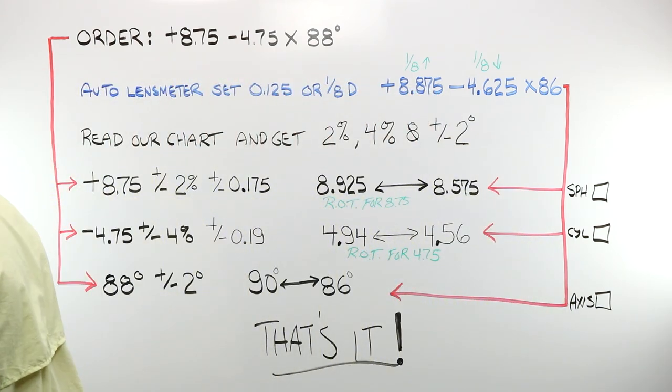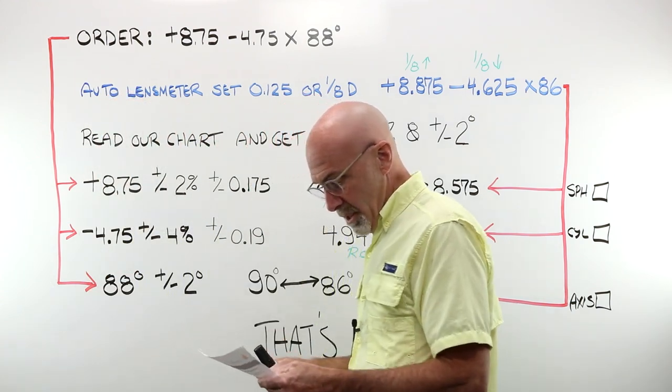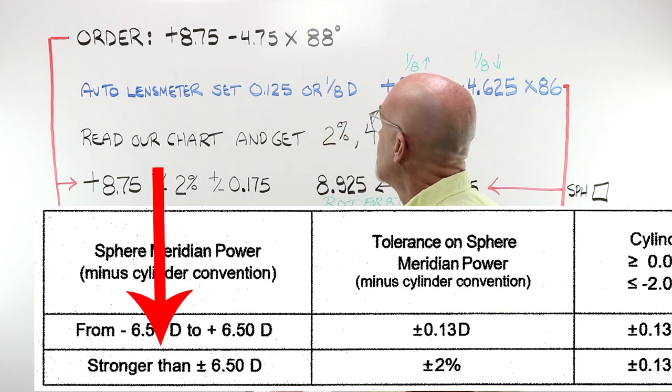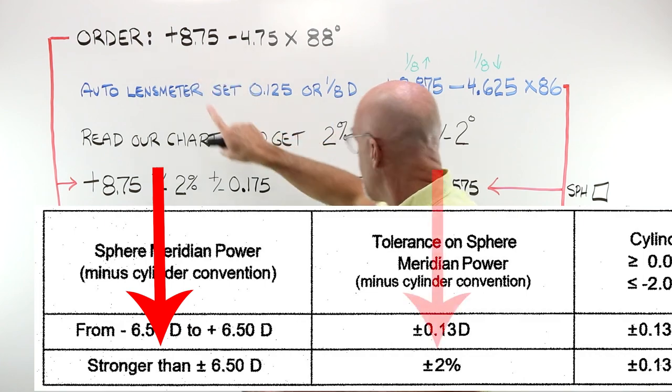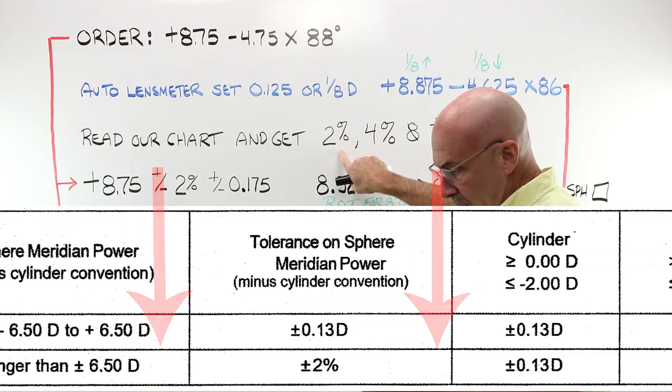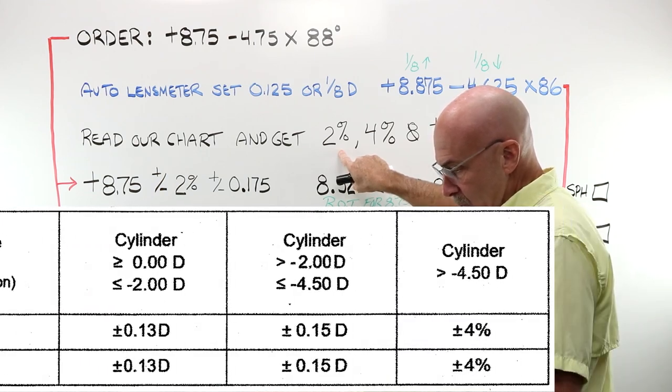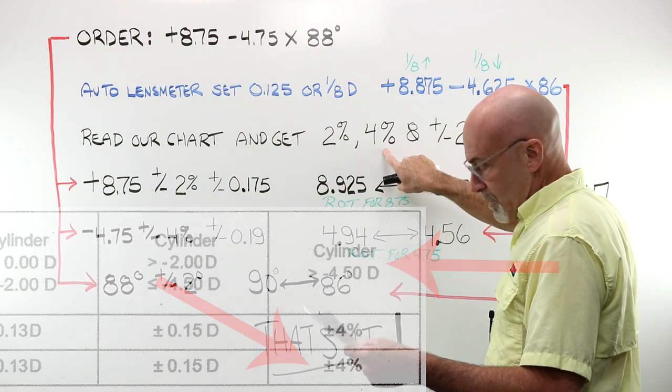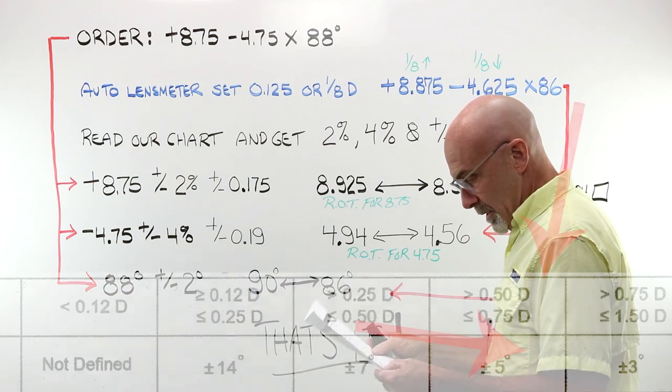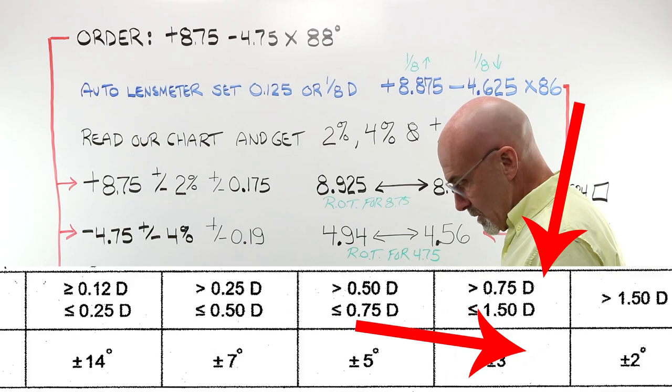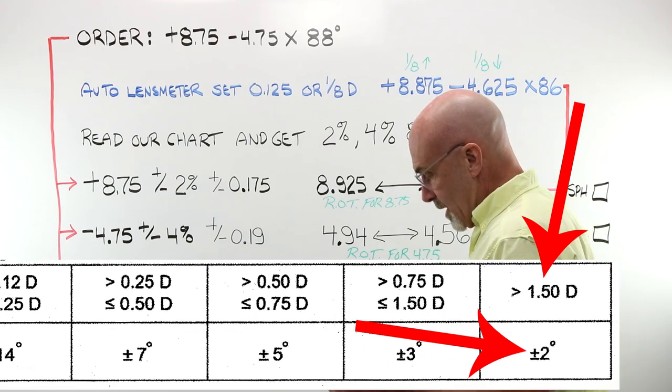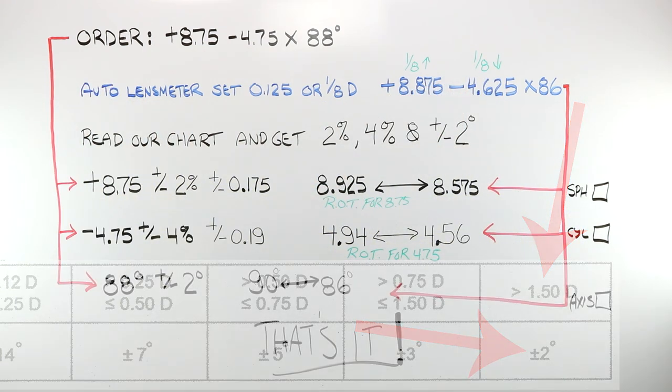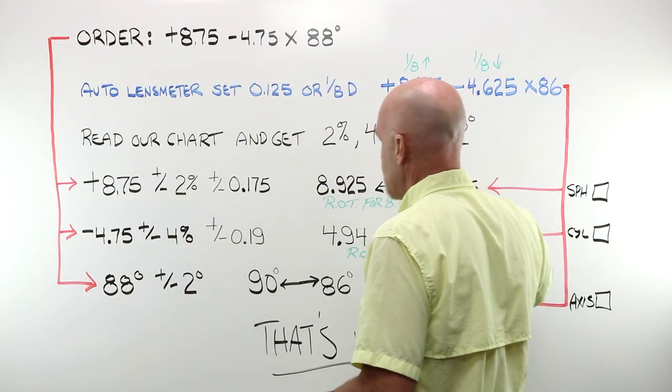So, let's figure out first what our tolerance is. Let's grab our ANSI sheet and read it correctly. Sphere meridian power stronger than plus 650. We certainly have that. That tells us our tolerance is plus or minus 2%. I read across and it tells me a cylinder value of greater than 450. We certainly have that. It's plus or minus 4%. And I look down a little bit more. Tolerance on the direction of cylinder axis. Anything over 1.5 gives me plus or minus 2 degrees. So, that's where that stuff comes from. Good. 2%, 4%, plus or minus 2 degrees.